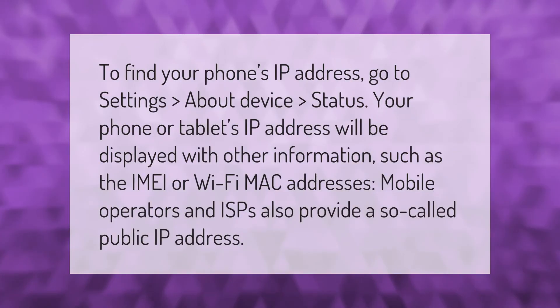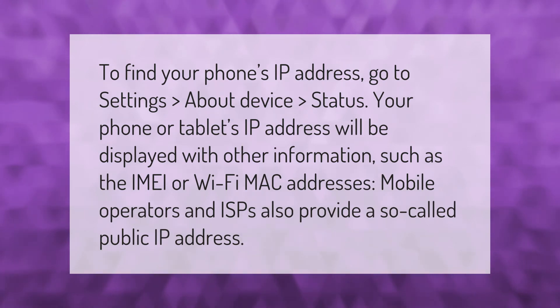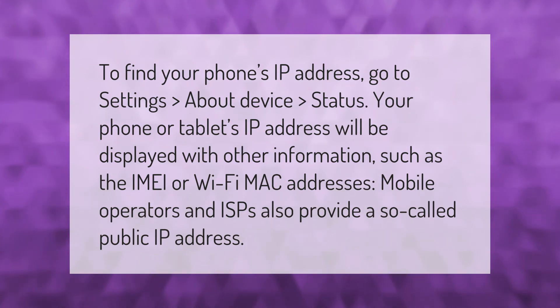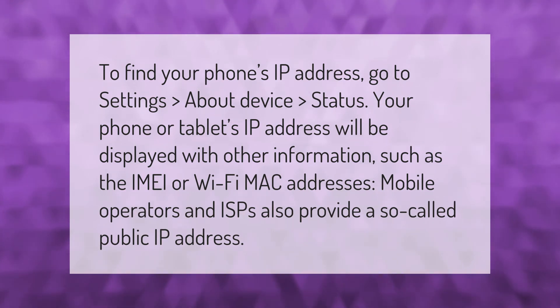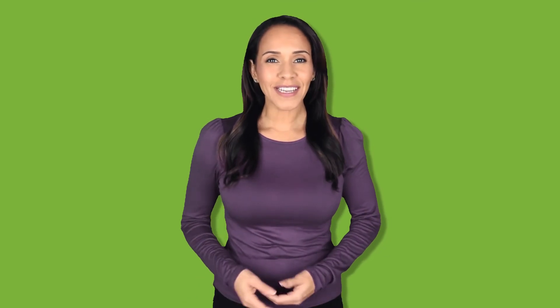To find your phone's IP address, go to Settings > About Device > Status. Your phone or tablet's IP address will be displayed along with other information such as the IMEI or Wi-Fi MAC addresses. Mobile operators and ISPs also provide a so-called public IP address. Thank you for watching — please subscribe and hit the bell notification.